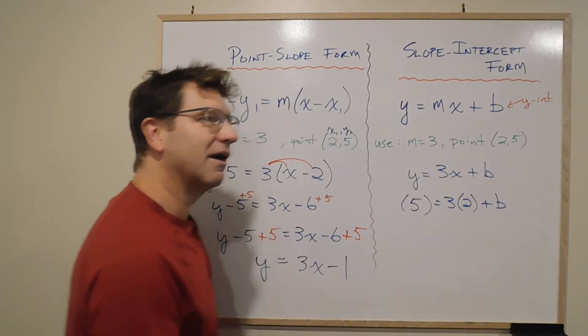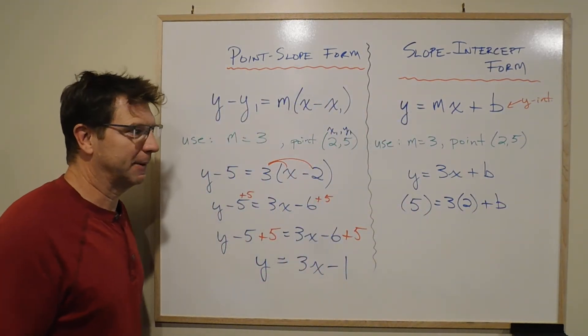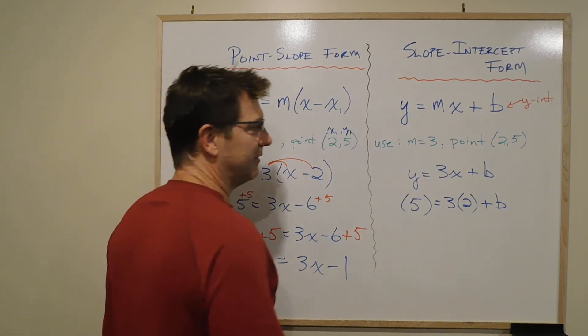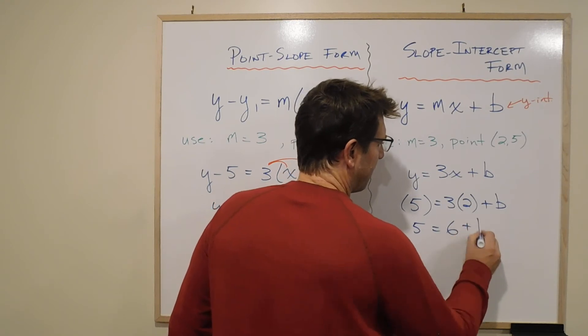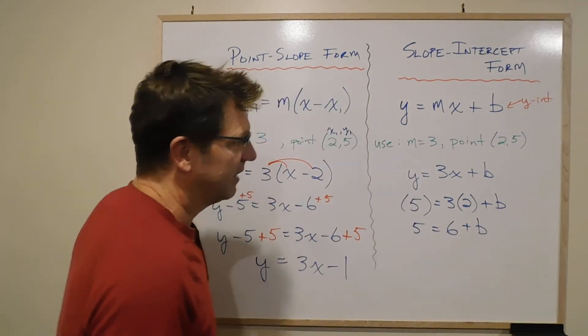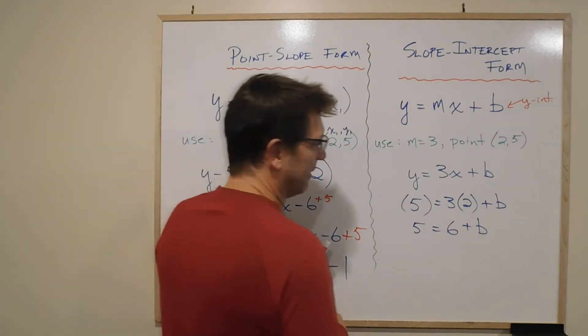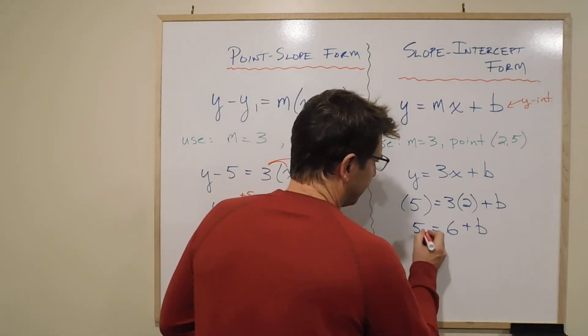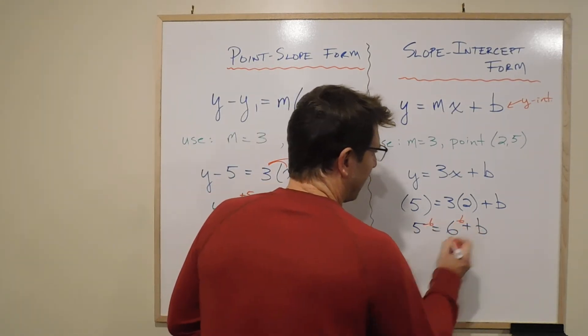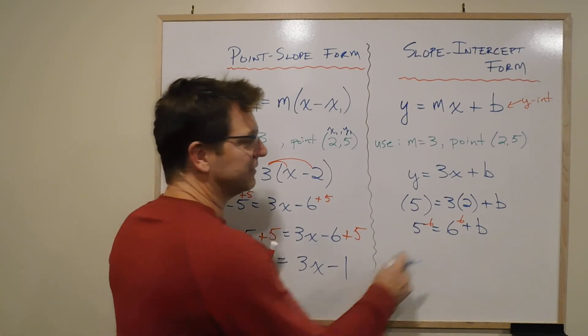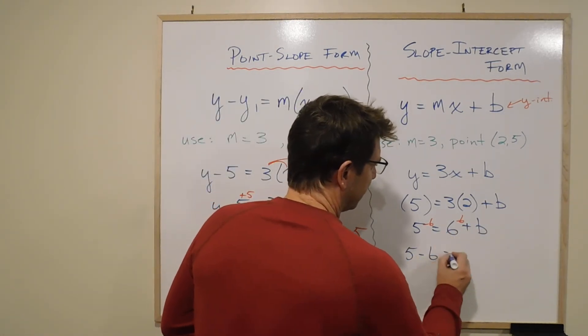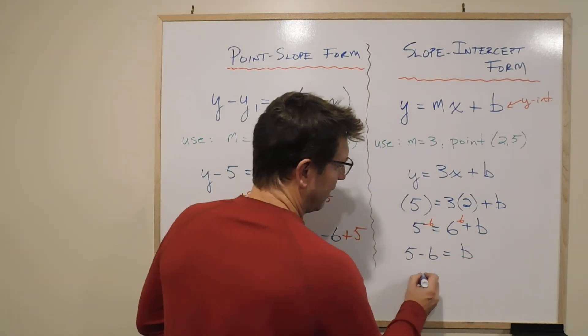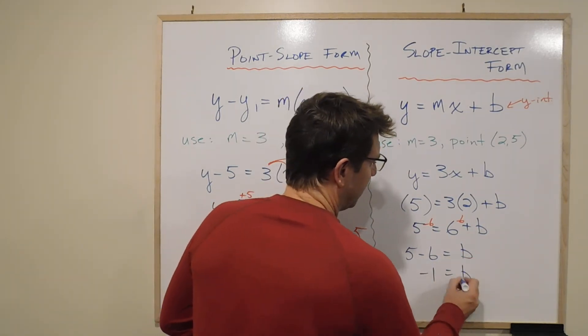So now what we have is this b, right? And what we do is we say, well, hold on, this is 5 equals 6 plus b. I want to have the b by itself, so I'm going to subtract 6 on both sides. Why would I do that? Well, 6 minus 6 is 0, so 5 minus 6 is going to be my b, and negative 1 is going to be equal b, right?